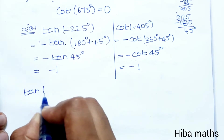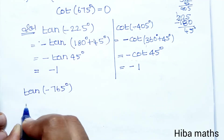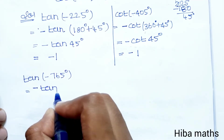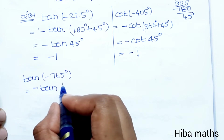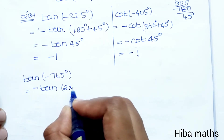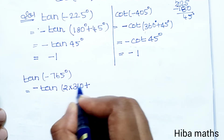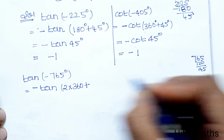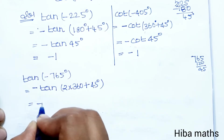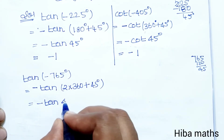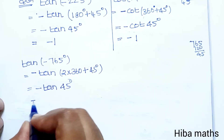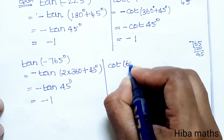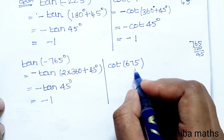Now solve tan(-765°). Since tan is an odd function, tan(-765°) = -tan(765°). Now 765° = 2×360° + 45° = 720° + 45°, so tan(765°) = tan(45°) = 1. Therefore tan(-765°) = -1.